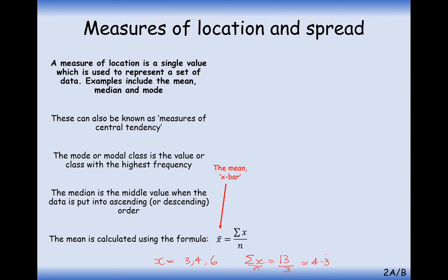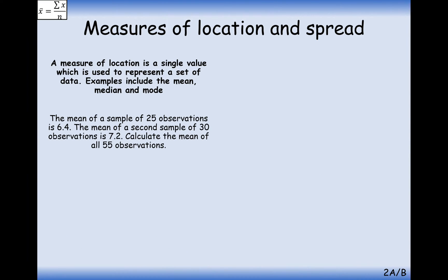When you've got an x with a bar on top, it means the mean of all of those x values. So we've got the sum of x's, and n is the number of bits of data. Okay, so this is the proper notation that we're going to use.